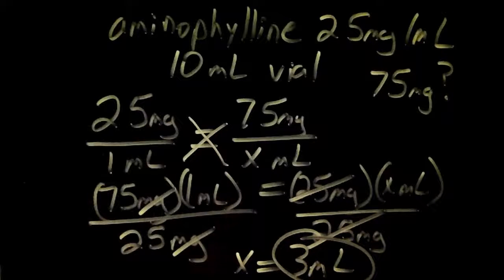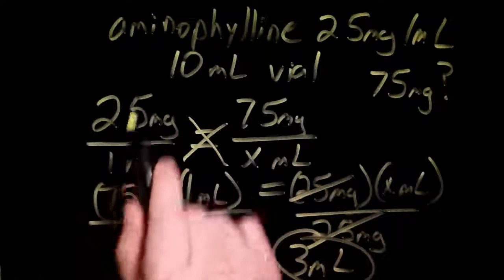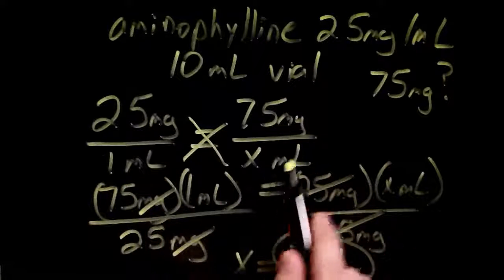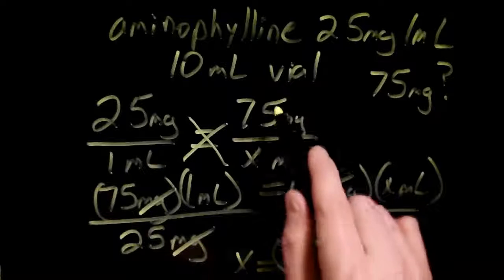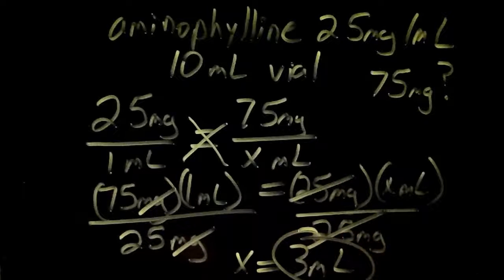Putting 75 over 25 in your calculator gives X equals 3 mils. That's the answer — to deliver 75 milligrams of aminophylline, you need to inject 3 milliliters.